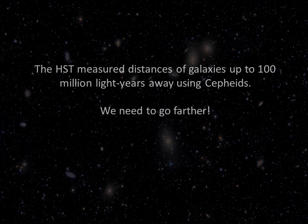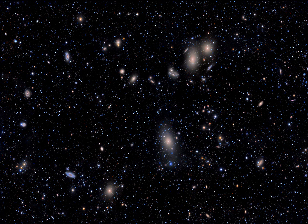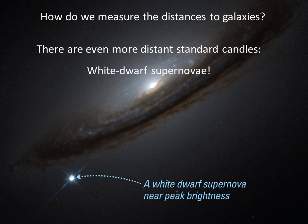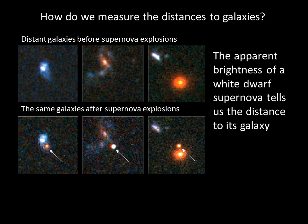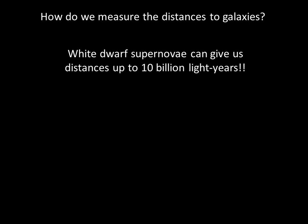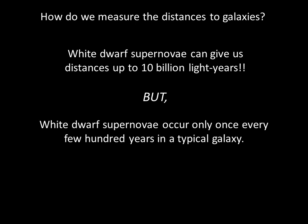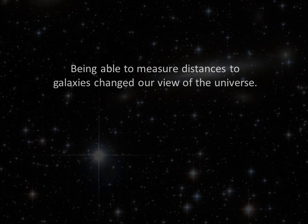The Hubble Space Telescope has measured distances of galaxies up to 100 million light-years away using Cepheid variable stars. But we want to measure the distance to galaxies billions of light-years away. Thankfully, there's an even brighter standard candle: White Dwarf Supernovae. White Dwarf Supernovae occur when a white dwarf reaches the 1.4 solar mass limit. Since every white dwarf supernova explodes in the same way, the luminosities of the explosions are all the same, and we can use the inverse square law to calculate distances up to 10 billion light-years. The only problem is that white dwarf supernovae occur only once every few hundred years in a typical galaxy, so you have to be lucky to see one.